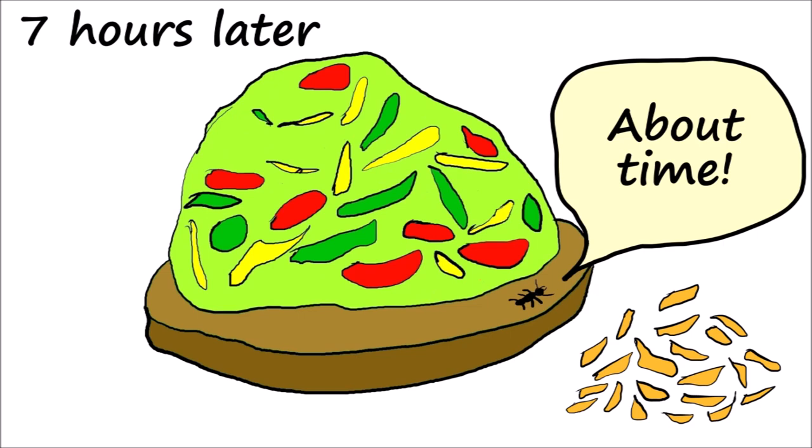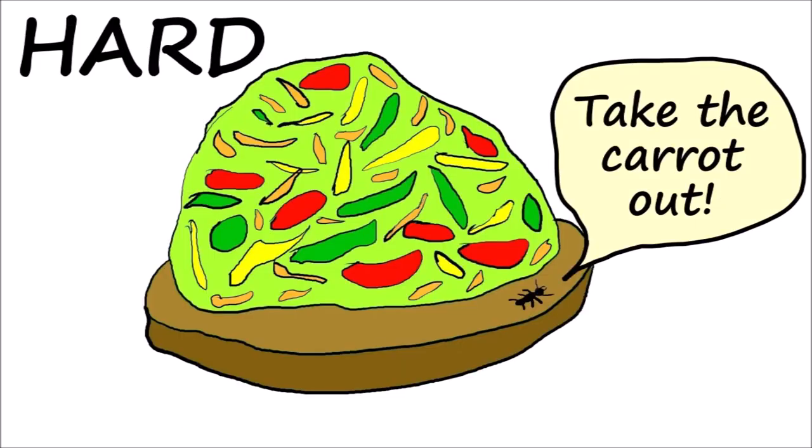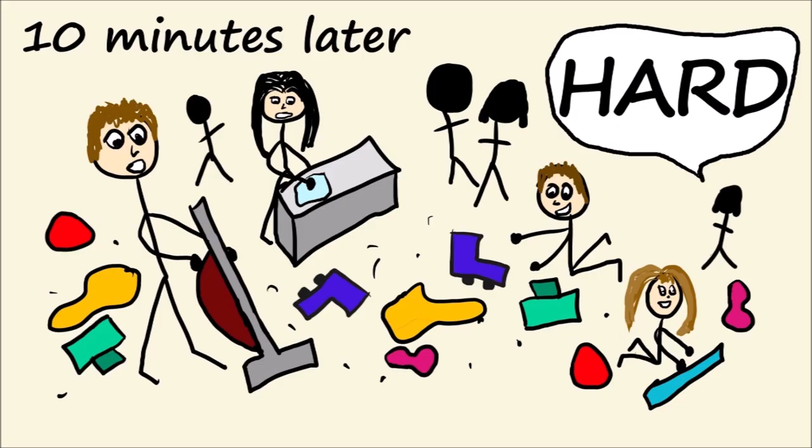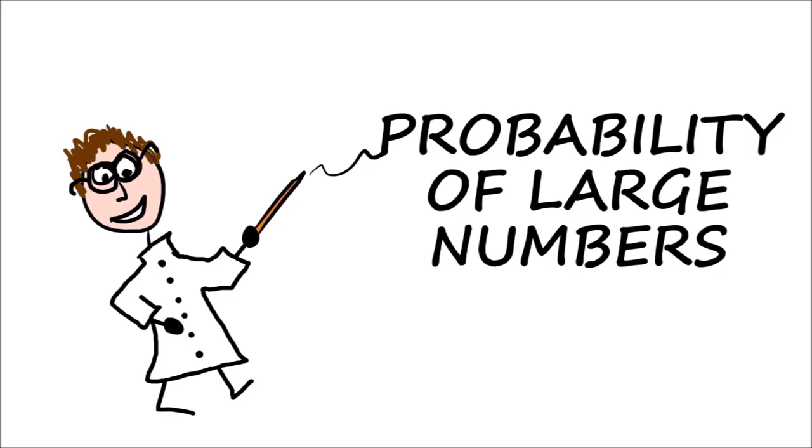Scientists call this phenomenon entropy — a gradual decline from order into disorder. That's what they call it, but why does it happen? Why is it hard to unmix a salad, or clean up a room, or build a tower from blocks? It has to do with the probability of large numbers.